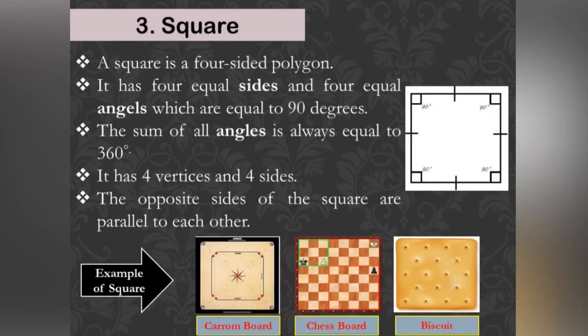Square: The square is a four-sided polygon. It has four equal sides and four equal angles, which are equal to 90 degrees. It has four vertices. The sum of all angles is always equal to 360 degrees.